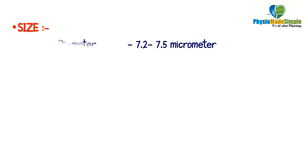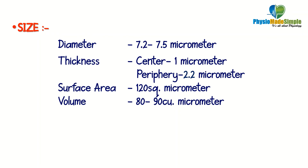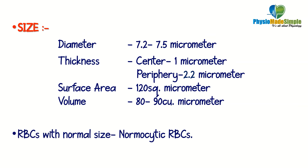The dimensions of red blood cells are: diameter 7.2 to 7.5 micrometers; center thickness 1 micrometer; peripheral thickness 2.2 micrometers; surface area 120 square micrometers; and volume 80 to 90 cubic micrometers. RBCs with a normal diameter of 7.2 to 7.5 micrometers are called normocytic RBCs — a term needed in many other contexts.